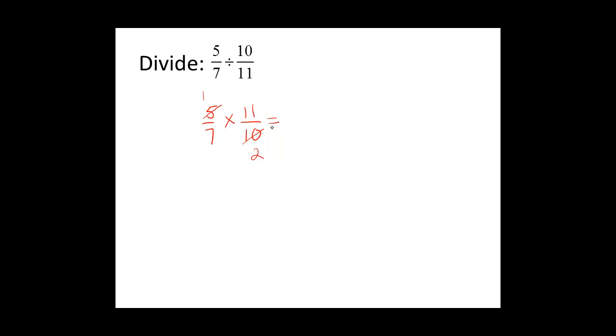I do not see any other factors in the numerators and denominators that I can divide out. So I will multiply my numerators together and get 11, and my denominators together and get 14. 5 sevenths divided by 10 elevenths equals 11 fourteenths.